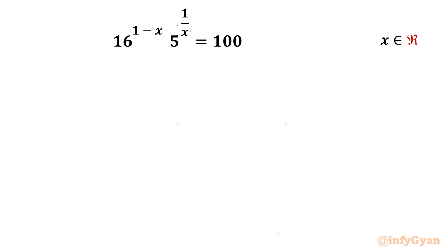Welcome back to Infigyan, my dear friends. In this video we have another very interesting and challenging question from exponential equations. It is 16 power (1 minus x) times 5 power (1 over x) equal to 100, and we are going to calculate real solutions. So let's get started.